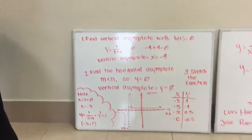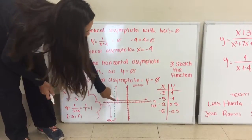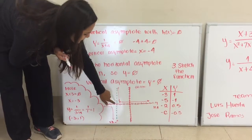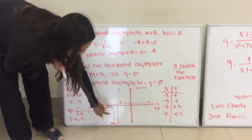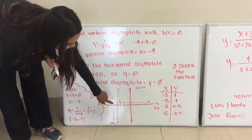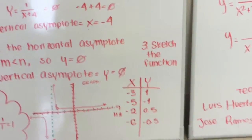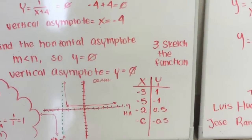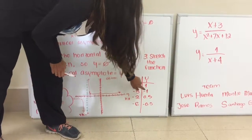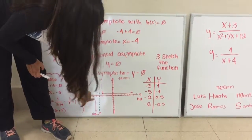And then, to find the other points, you have to get the numbers that are next to the asymptote. You will get negative 3 and negative 5. To get negative 3, you have to substitute and you will get 1. To get negative 5, you will substitute it and get negative 1. And then you will graph it.